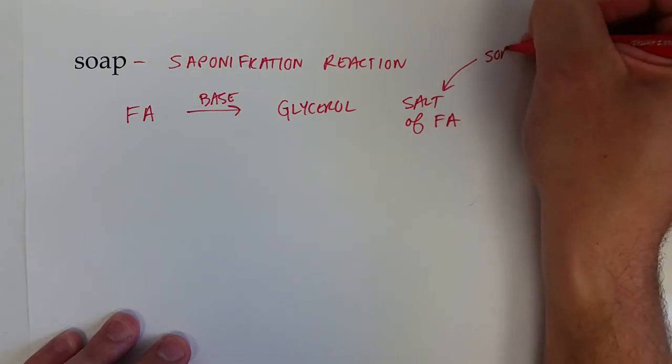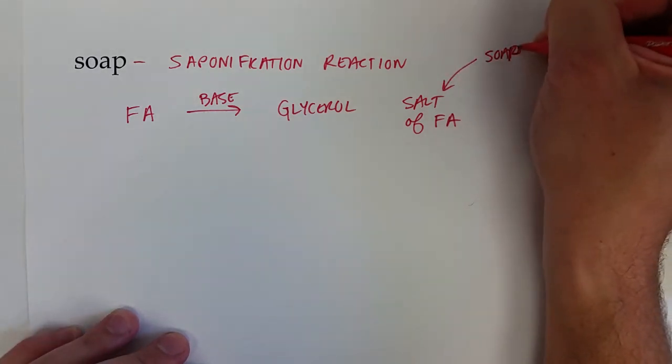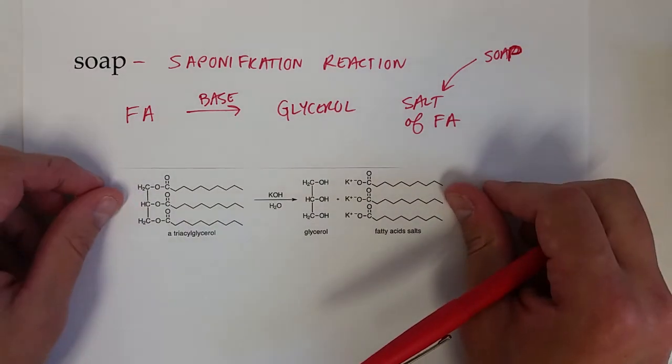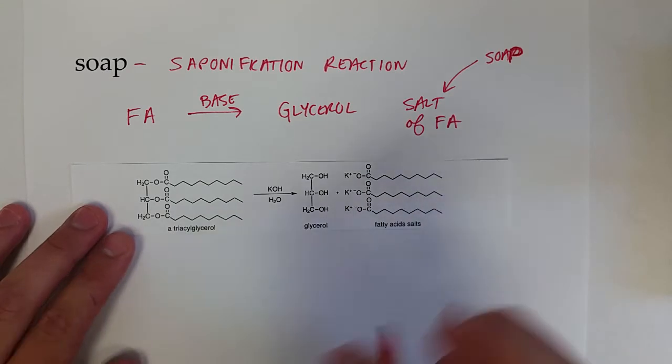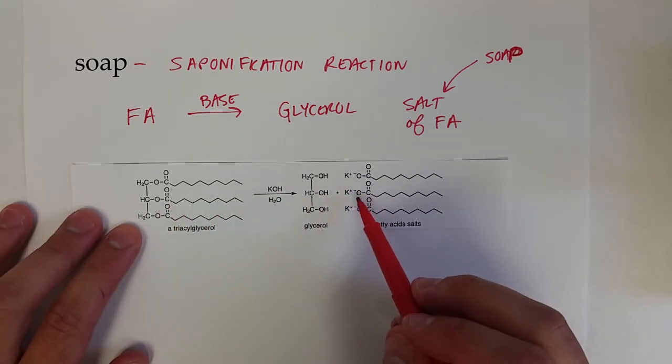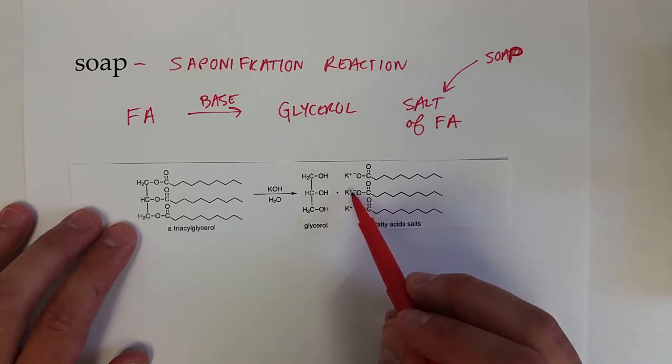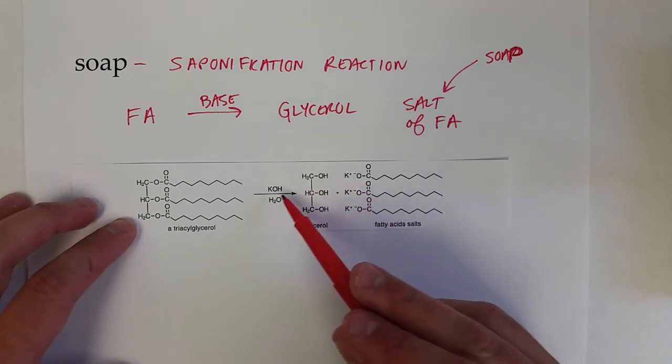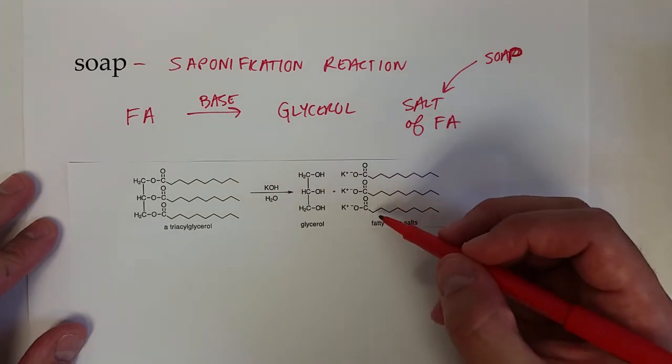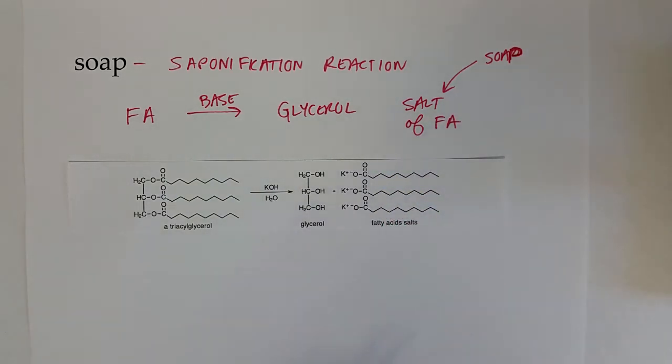So here's one example where we have a triacylglycerol. We'll treat it with a base, and again we're basically going to break that ester bond. But instead of complete hydrolysis, we're actually going to deprotonate that carboxylic acid on the fatty acid to make the salt. So if this was potassium hydroxide, now we have the potassium carboxylate salt of each fatty acid.